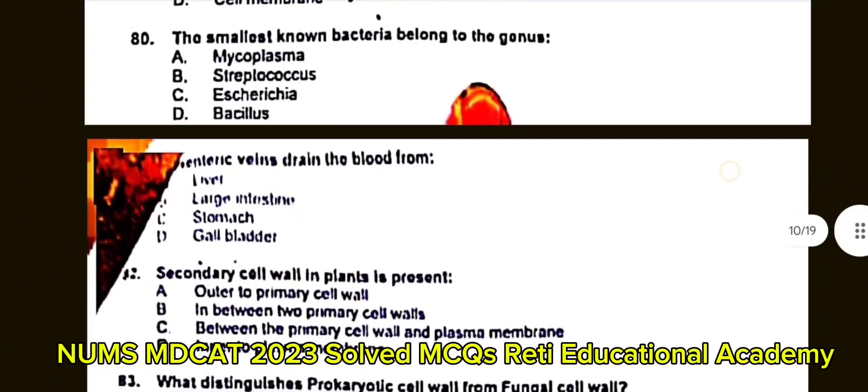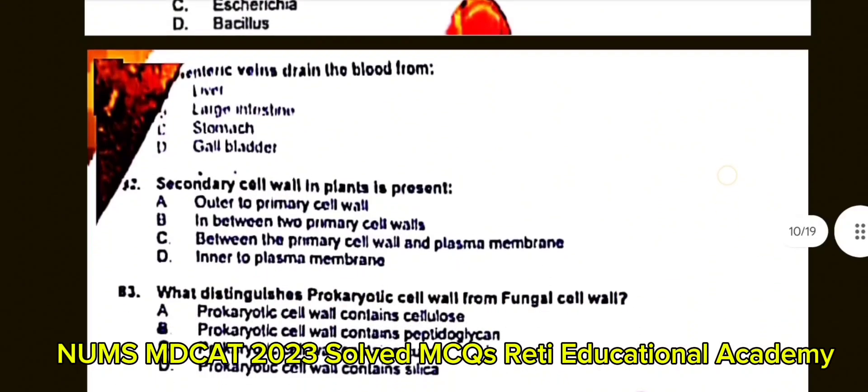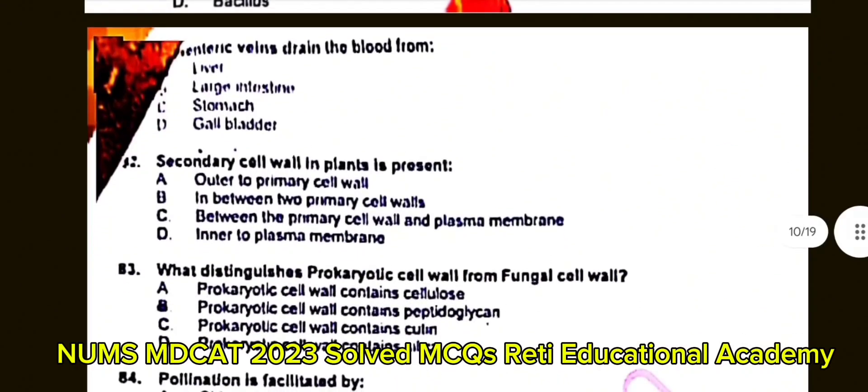Question number 81: Mesenteric veins drain blood from? A. Liver. B. Large intestine. C. Stomach. D. Gallbladder. The correct answer is B: Large intestine.